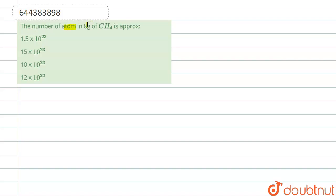The number of atoms in 8 gram of CH4 is approximately. So first we calculate the number of moles. Moles of CH4: the given mass is 8 gram and molecular mass is 16 gram, right.